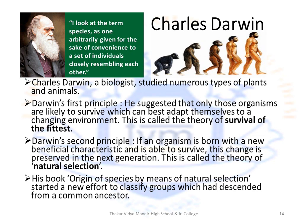His second principle is called the theory of natural selection. According to this theory, if an organism is born with a new beneficial characteristic and is able to survive, this change is preserved in the next generation — meaning it keeps evolving, and only the best keeps evolving further if it survives. His book 'Origin of Species by Means of Natural Selection' started a new effort to classify groups descended from a common ancestor.